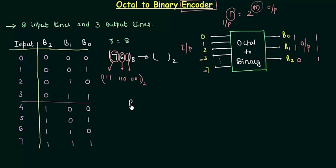Let's first see for b2 when it is high. b2 is high for the last 4 cases and low for the first 4 cases. For the last 4 cases, the inputs are 4, 5, 6, 7. So b2 equals 4 or 5 or 6 or 7, which means if any of 4, 5, 6, 7 is high, b2 will be high.